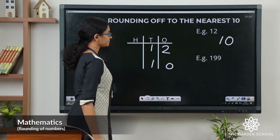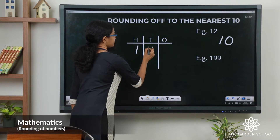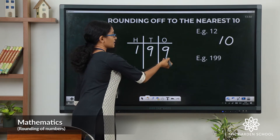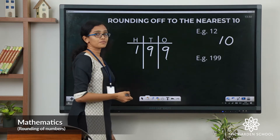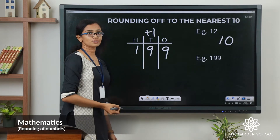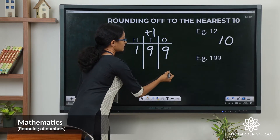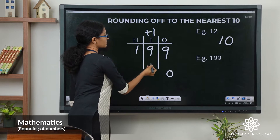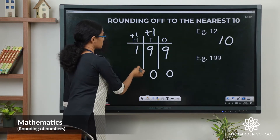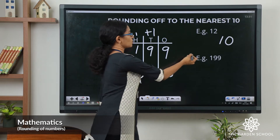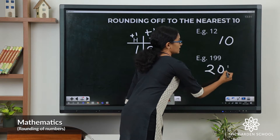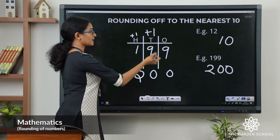Let us see the second number: 199. Here the digit in the ones place is 9, which is more than 5. So we have to add 1 to the tens digit and change the ones digit to 0. Adding 1 to the tens digit will make it 9 plus 1 equals 10, so 0 comes here and the carry forward 1 comes to the hundreds place. So this becomes 200. So 199 rounded off to the nearest 10 will give you 200, which is the nearest multiple of 10 in this number's case.